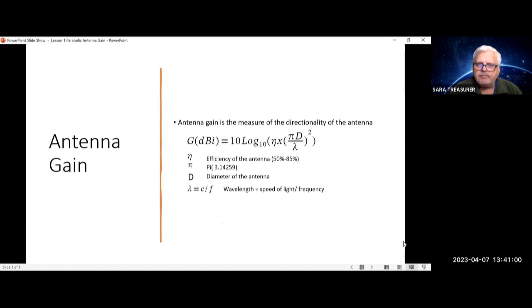What is antenna gain? It is the measure of the directionality of the antenna. Antenna gain is efficiency times quantity of pi d over lambda squared, all that times 10 log.